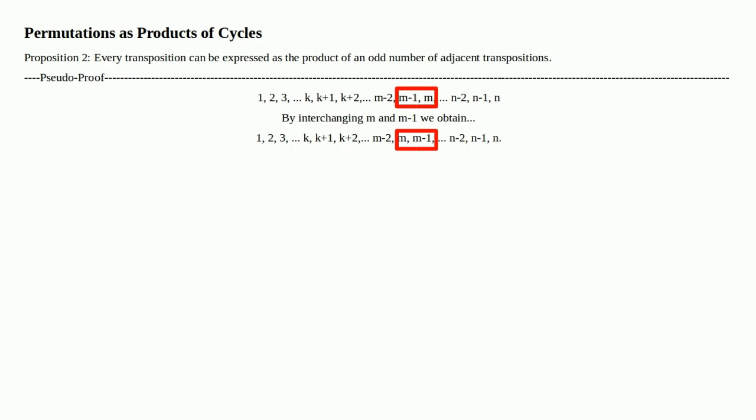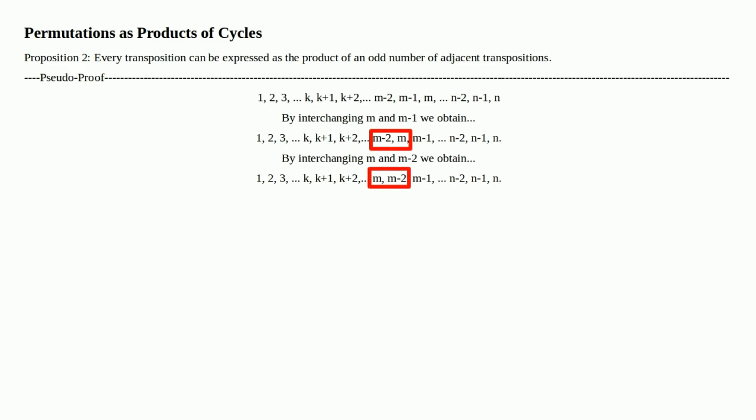By interchanging M and M minus 1, we obtain the following ordering — everything is in order except we've switched M and M minus 1, so we've moved M back to the left. Notice M is now next to M minus 2. By interchanging M and M minus 2, we obtain the following ordering, moving M to the left again.